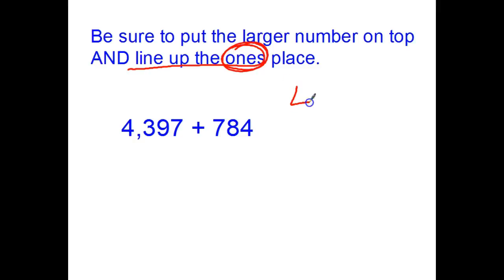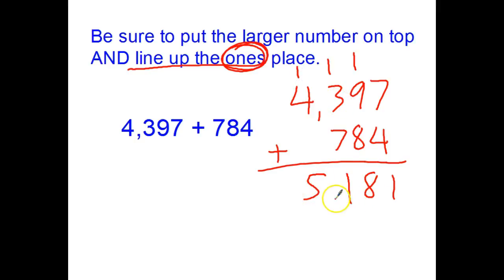So I'm putting the bigger number on top, 4,397, and I want to line up the ones place, so I've got a 4 in the ones, an 8 in the tens, and a 7 there. Get my line underneath and add. 7 plus 4 is 11, carry my 1. 1 to 9 is 10, plus 8 more, 18. Carry my 1. 3 is 4, plus 7 is 11. Carry my 1. 5. I put my comma 1, 2, 3 spots over: 5,181.